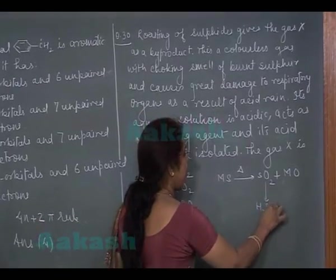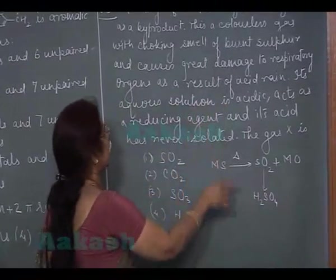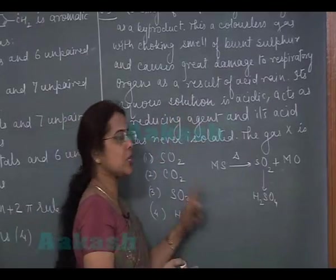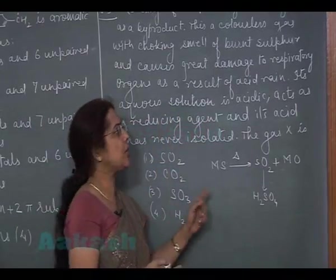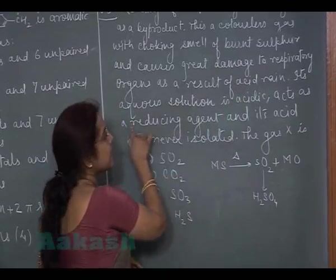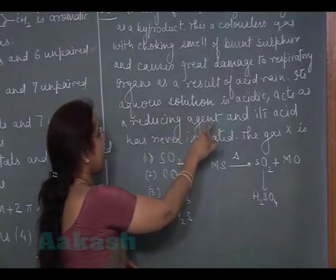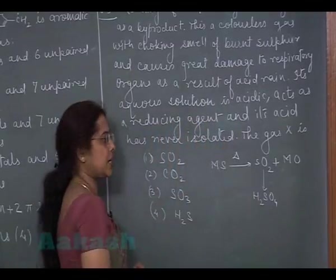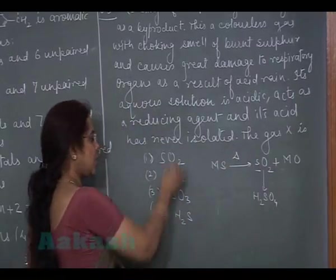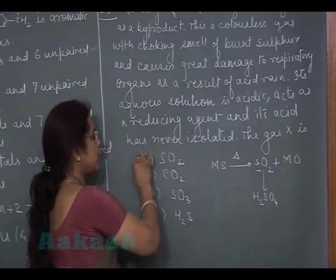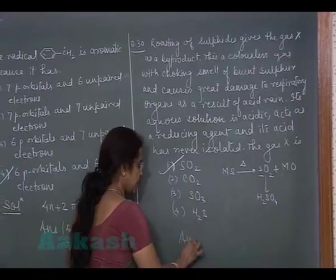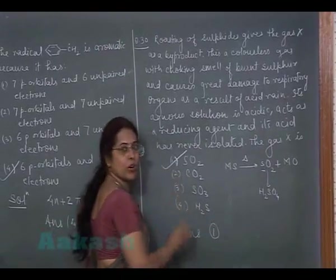And this sulphuric acid is a great cause of acid rain. Its aqueous solution is acidic. That is true because sulphur is a non-metal. So its aqueous solution or oxides aqueous solution will be acidic. Act as a reducing agent and its acid has never isolated. So here the answer should be sulphur dioxide. First option is sulphur dioxide gas and this is the correct answer. So answer is first option.